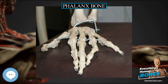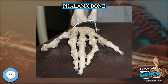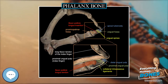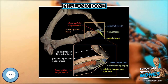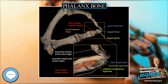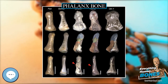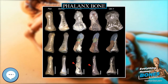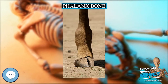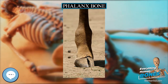Phalanx Bone. The phalanges, singular phalanx, are digital bones in the hands and feet of most vertebrates. In primates, the thumbs and big toes have two phalanges while the other digits have three phalanges. The phalanges are classed as long bones.